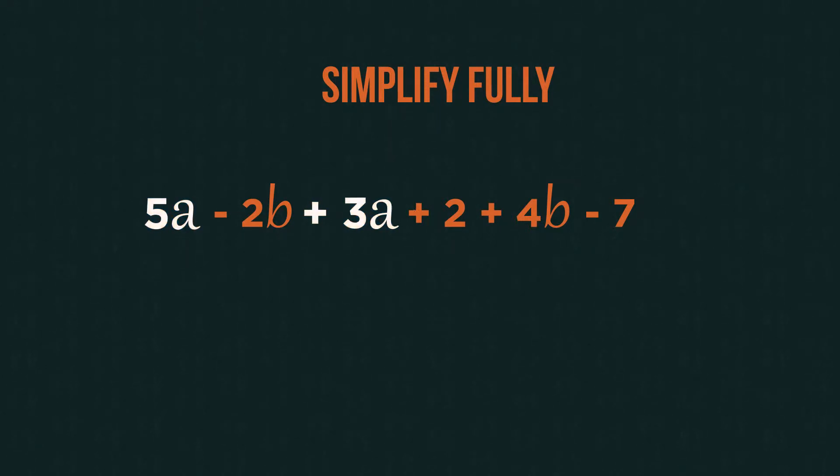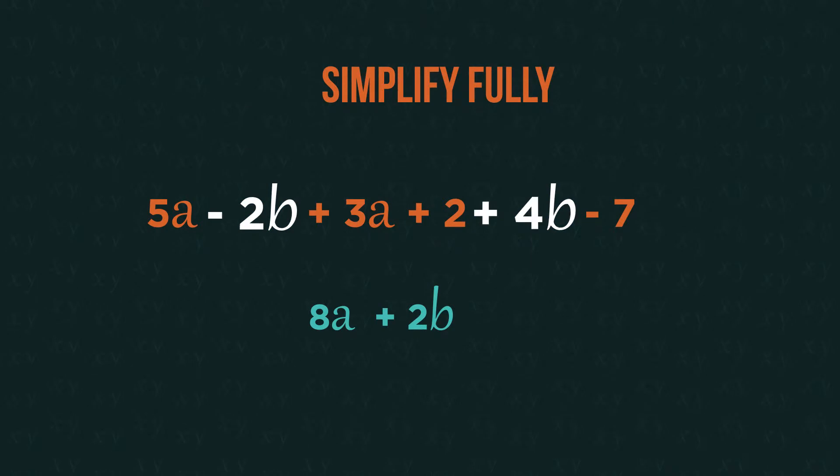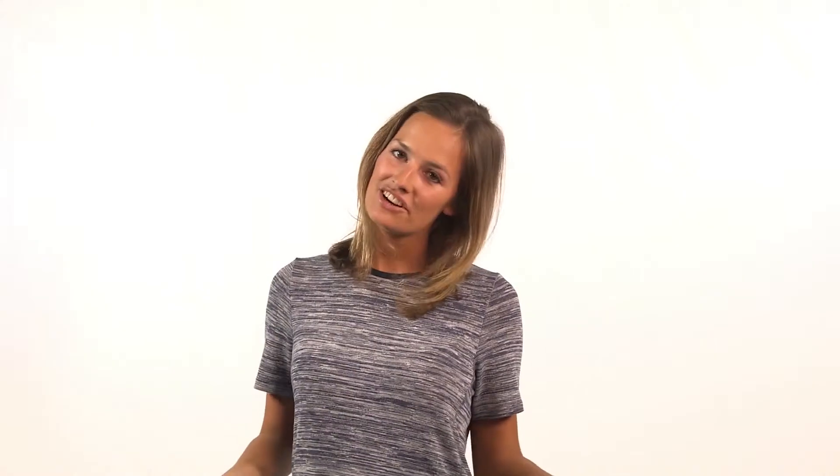So we can combine the a's to get 8a. Then the b's, including the sign in front of each term, to get positive 2b. And finally, the numbers, to get negative 5. We cannot combine different letters, so this is the simplest form. This expression might represent 8 apples and 2 bananas, which are completely different things, so we can't combine them.